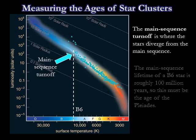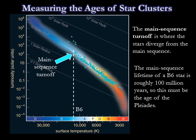The main sequence lifetime of a B6 star is roughly 100 million years, so this must be the age of the Pleiades. Any star in the Pleiades that was born with a main sequence spectral type hotter than B6 had a lifetime shorter than 100 million years and is no longer found on the main sequence.